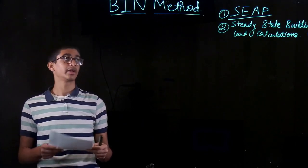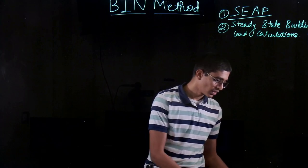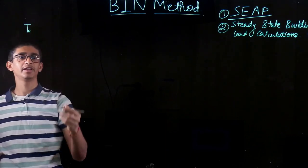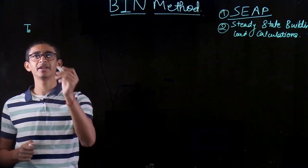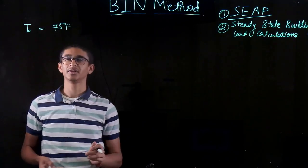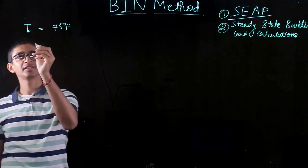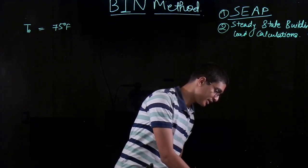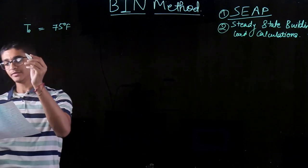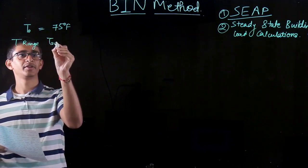This allows us to have more accurate energy load calculations, and as I explain the method it will become clearer. Basically, in the BIN method, we have an outside temperature that varies based on months or time periods. So instead of having one constant average temperature of, say, 75°F for the whole year, what we do is split the outside temperature into various bins. Let me use a proper example.